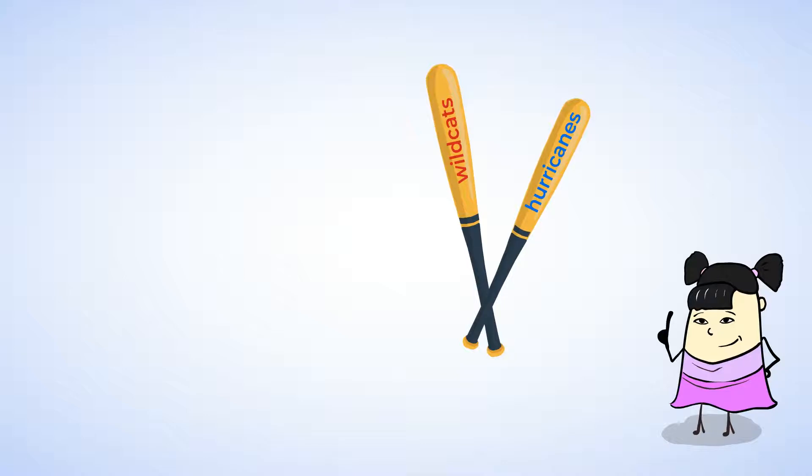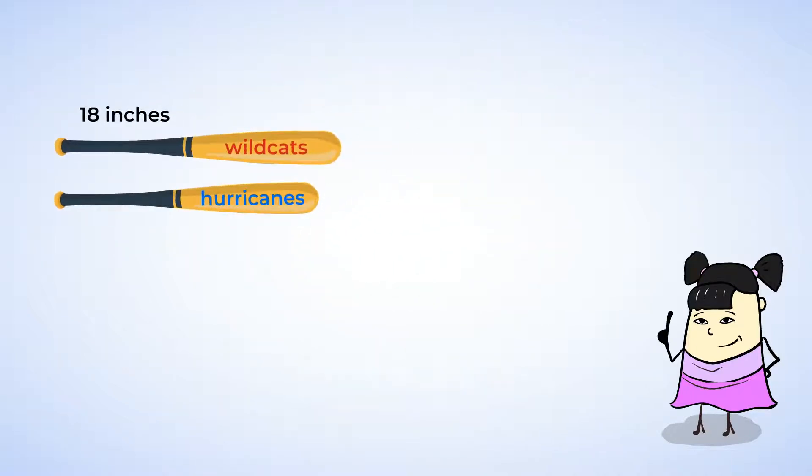The Wildcats souvenir baseball bat is 18 inches long. Let's estimate how long the Hurricanes souvenir baseball bat might be. We can use the length of the Wildcats baseball bat to estimate the length of the Hurricanes bat.